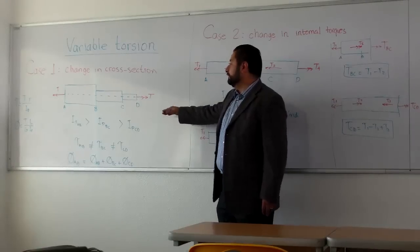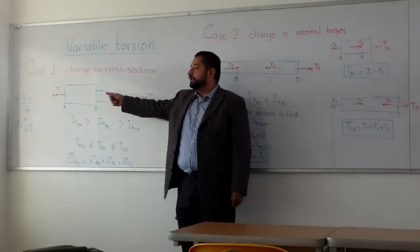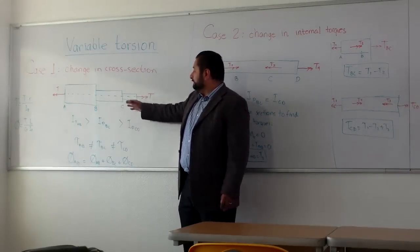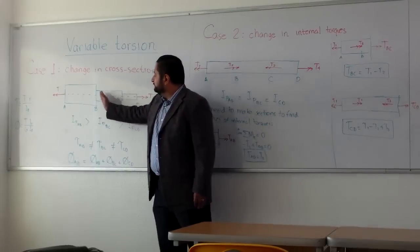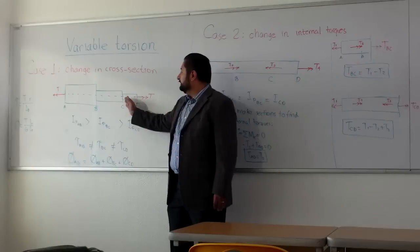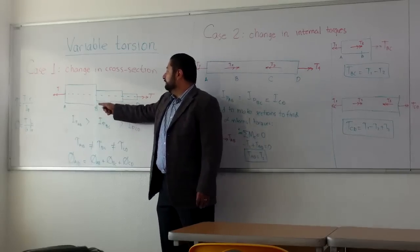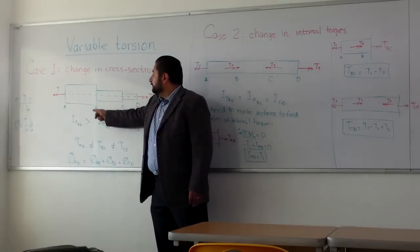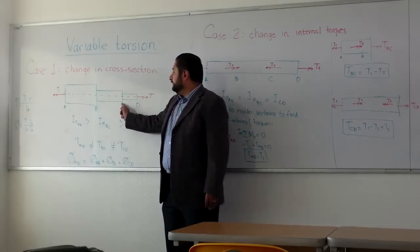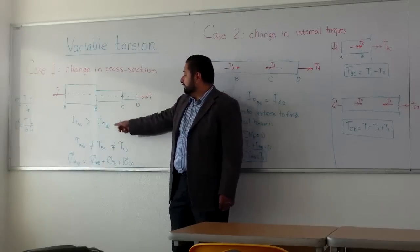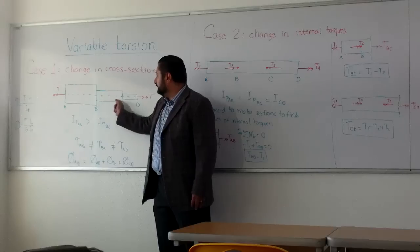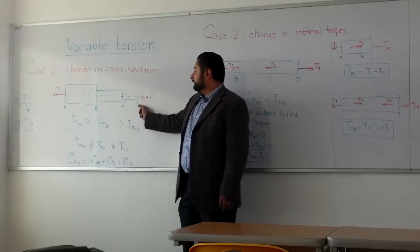The first one, the basic one, we only have torques applied at the ends of a bar, but we have seen that the bar has three steps, different cross sections. From AB we have the highest polar moment of inertia and then it reduces to a second polar moment of inertia and therefore to a third one.